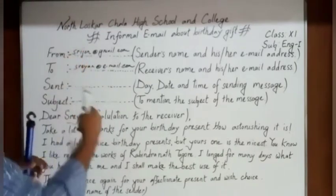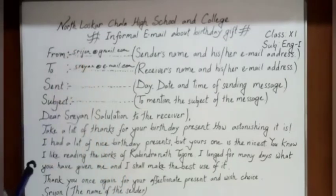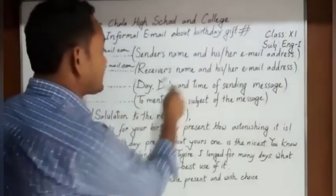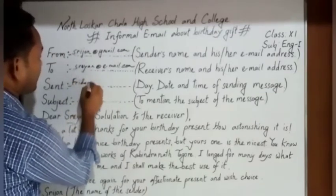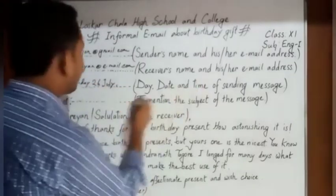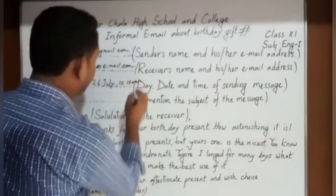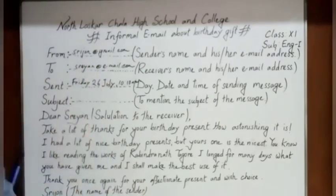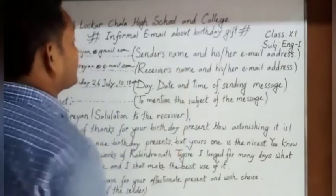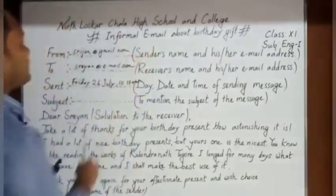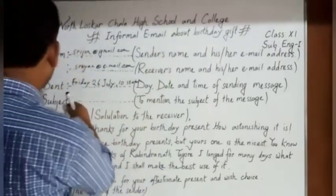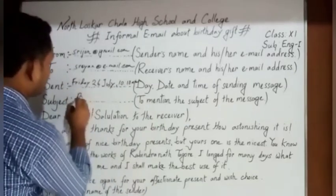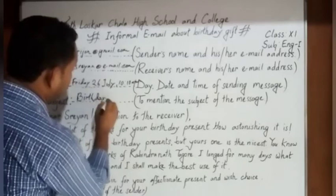All the alphabet in the names will be in small letters. For 'Sent' — the date and time of sending the message — suppose Friday, 26 July, time 10:10 a.m. For 'Subject' — what is the topic of the email — I have written: see here, informal email about birthday gift. So you can mention here: Birthday Gift.